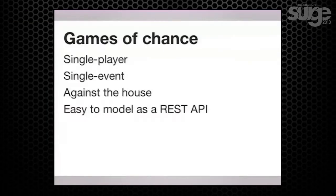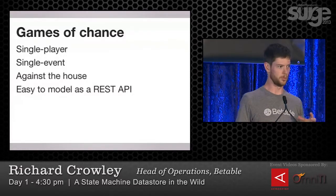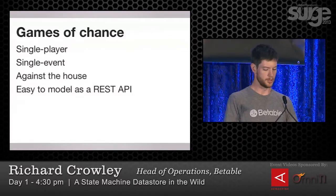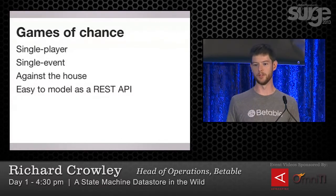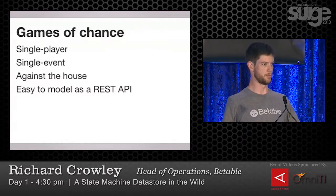We began our quest to take over the gambling industry, which is easy in some sense because there's not really been any innovation there in a hundred years and they're really working with some 90s technology. We began by tackling what we were calling the games of chance. These were single player games that were resolved in single events — things like slot machines, like just a weighted list of outcomes and picking one randomly. And all these games were played against the house. Bettable is the house in this world. These single-player, single-event games made it really easy to build REST APIs.